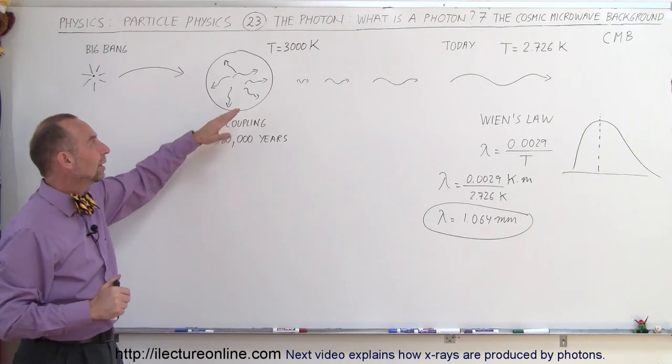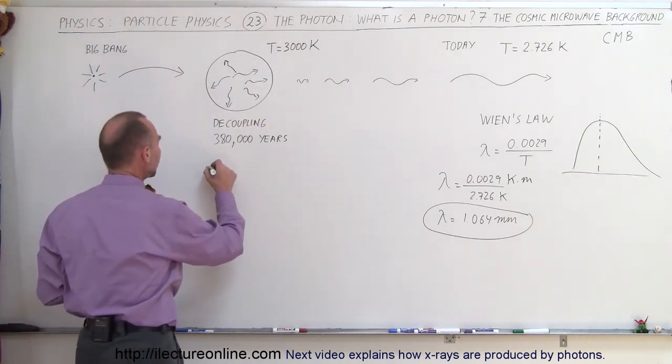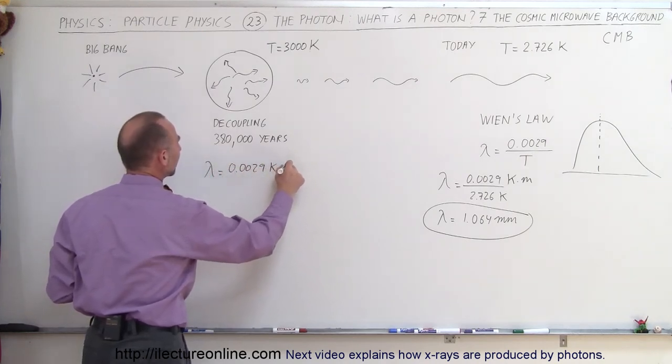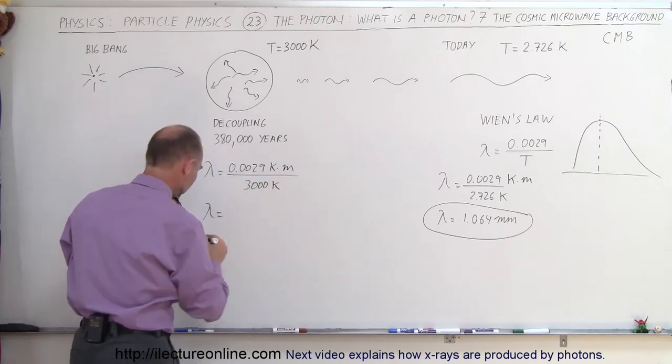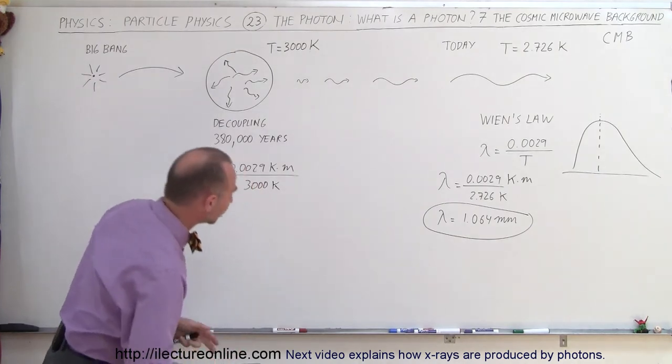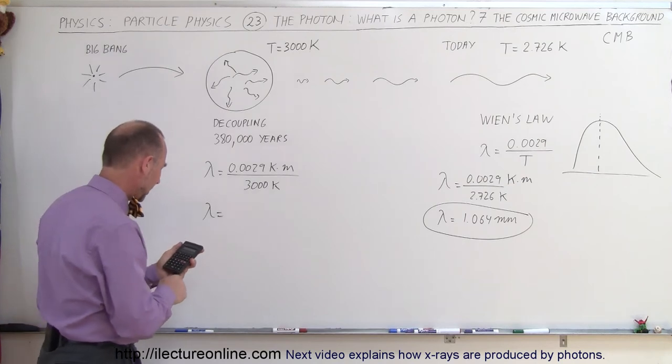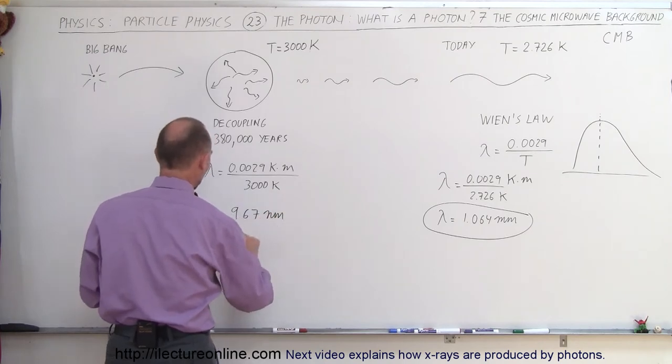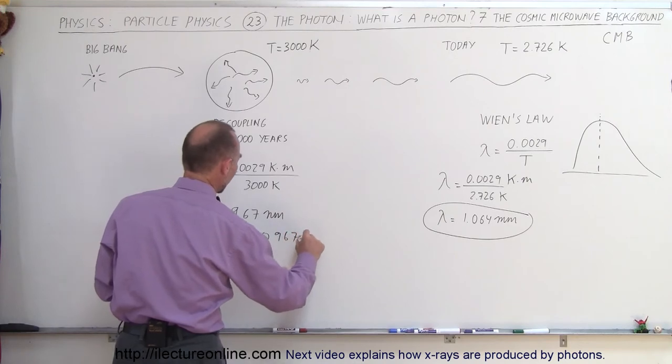At that point the radiation wavelength, we can use Wien's Law to figure out what it was then, so the wavelength was equal to 0.0029 Kelvin times meters divided by 3,000 Kelvin. And so lambda was equal to 0.0029 divided by 3,000, and we get a wavelength of 967 nanometers, which is equal to 0.000967 millimeters.